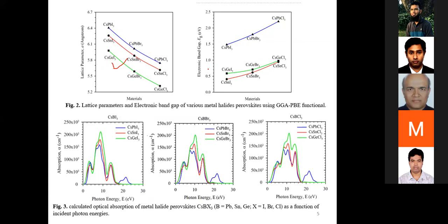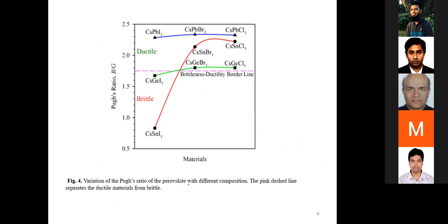They calculated the electronic band gap for various types of halides, and also studied the absorption coefficient. Among them, the cesium germanium halide has a high absorption coefficient. They also studied the Pugh's ratio for these materials, and for some compounds the Pugh's ratio indicates whether the material is ductile or brittle.